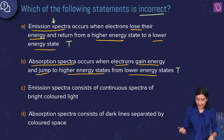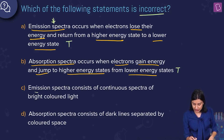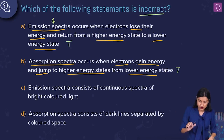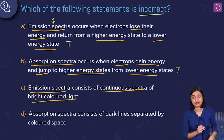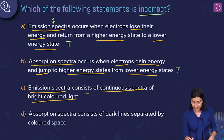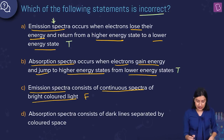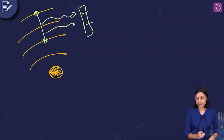Option C says emission spectra consists of continuous spectra of bright colored light. No — this is false. Emission spectrum, like look at this example here, when the electron gets de-excited, for one de-excitation you will have one corresponding wavelength.